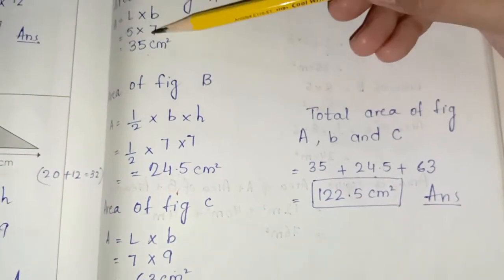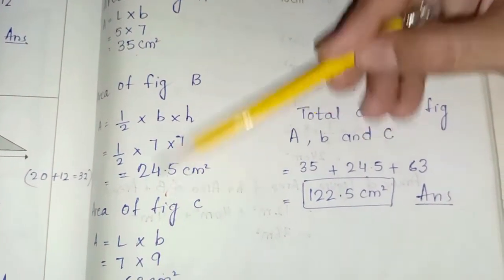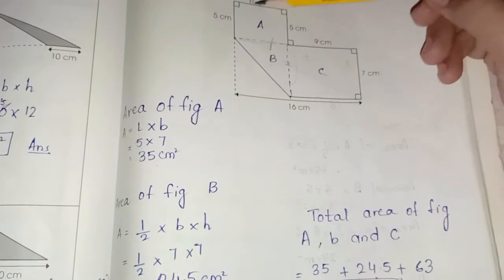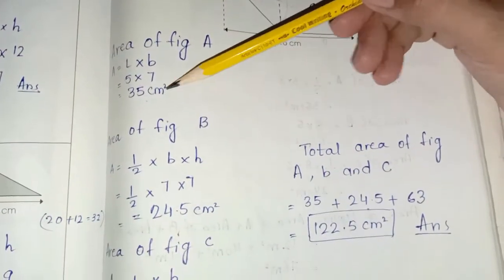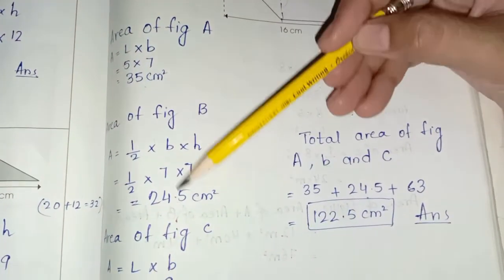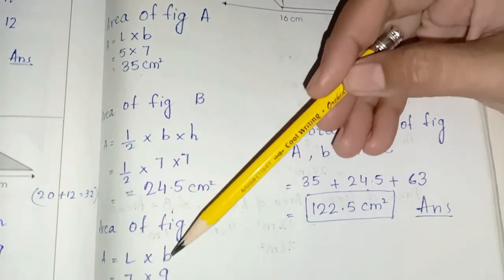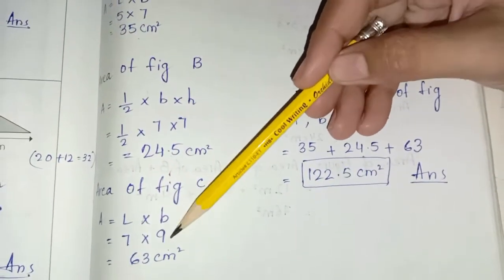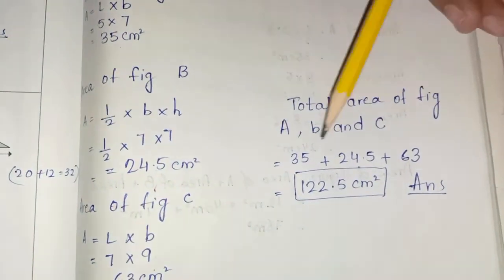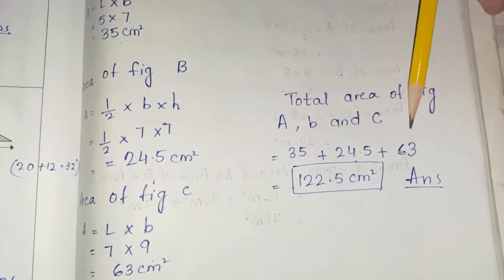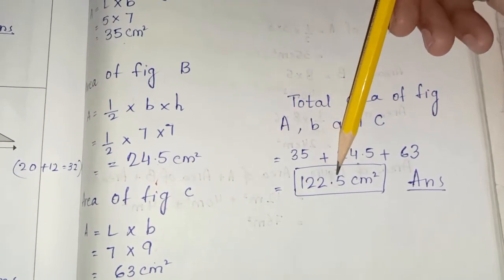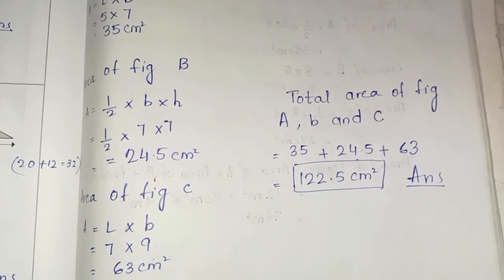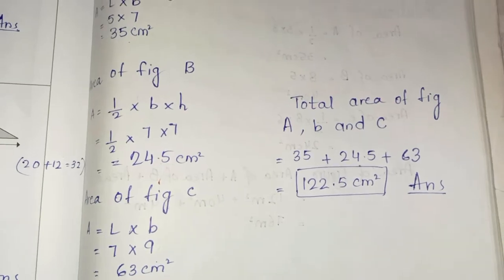Now we have to add all the areas of figures A, B, and C: 35 plus 24.5 plus 63. So the total answer is 122.5 centimeters squared.